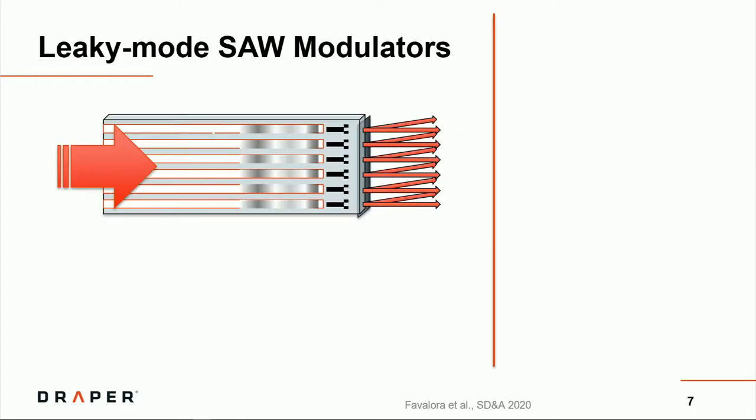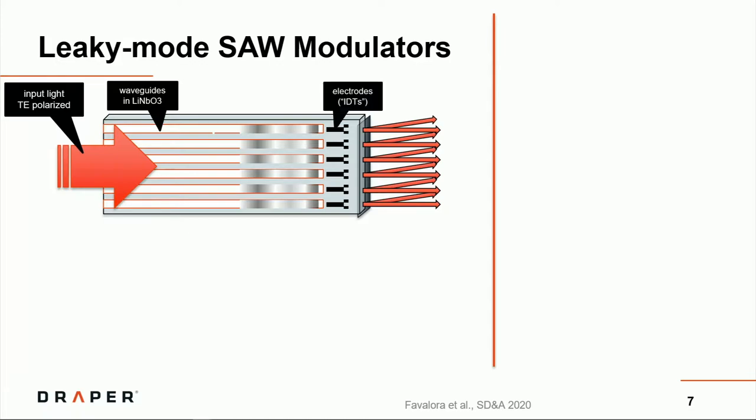This is a brief overview of so-called leaky mode surface acoustic wave modulators. In this type of optical modulator, there is a substrate. People usually use lithium niobate, which is a transparent high-index material that is also piezoelectric. And you deposit or you cause there to be optical waveguides just below the surface, so that when illuminated with laser light, we like TE-polarized light, the light gets trapped inside of this waveguide until something happens.